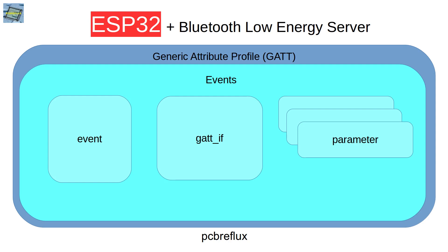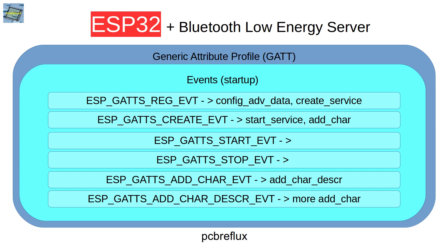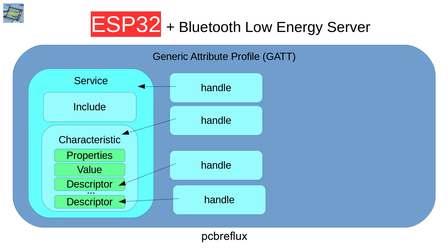For the Generic Attribute Profile, every event has an event identifier, a GATT interface, and one or more parameters. Looking at the startup phase, we get events like the register event, after which we can configure the advertising data and create our service. When we get the create service event, we can start the service and add characteristics. We then get start and stop events, and events after we add a characteristic, at which point we may add a descriptor.